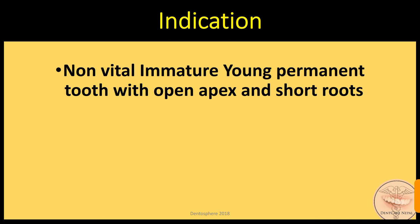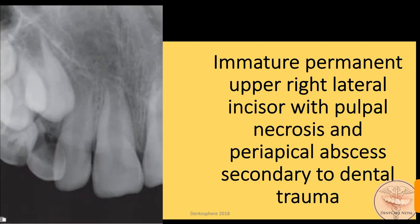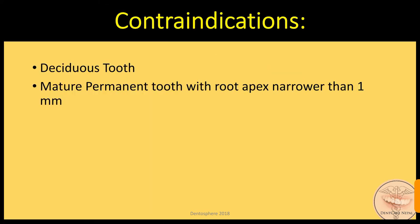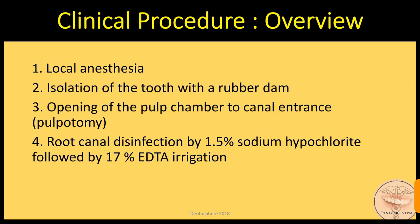The indication for case selection is a non-vital immature young permanent tooth with open apex and short roots, as indicated in this radiograph. Regarding contraindications: deciduous teeth should not be selected for revascularization, as they would eventually undergo root resorption for physiological exfoliation. For mature permanent teeth with a root apex narrower than 1 mm, it is very unlikely that the stem cells of the apical papilla would migrate easily via such a narrow entrance to favor regeneration.